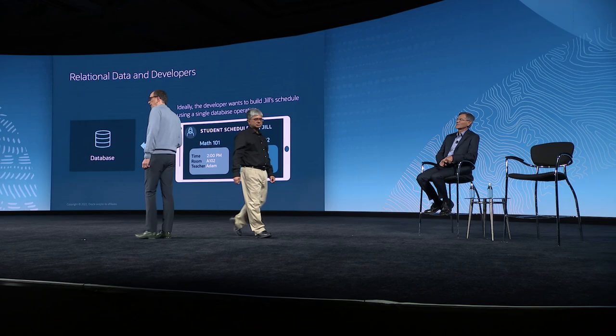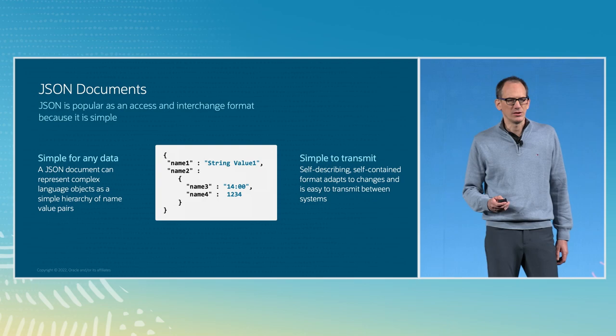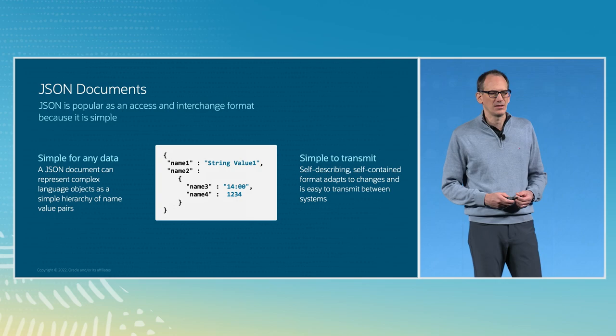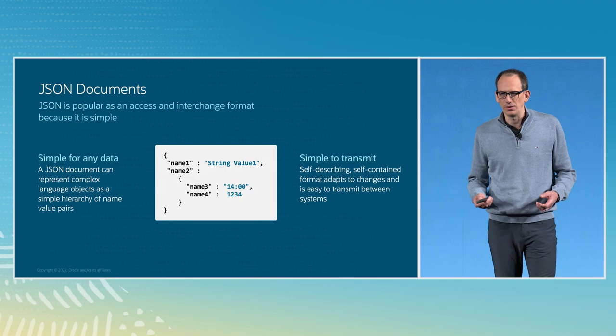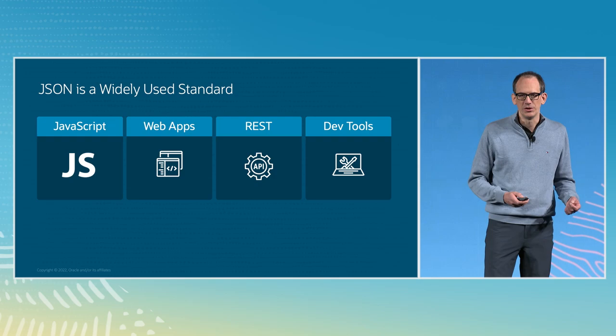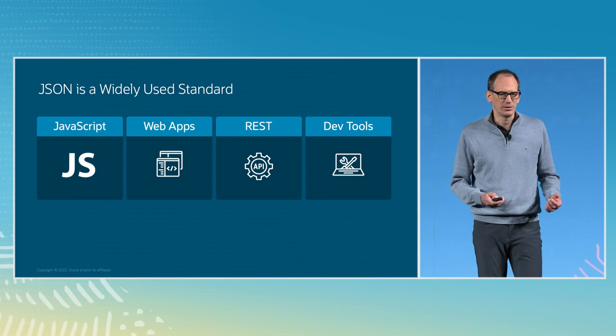What if we use JSON documents to build this application? This would really simplify database access. JSON is very popular as an access and interchange format because it is so simple. A JSON document can represent any object of your language — for example, the student schedule as a simple hierarchy of name-value pairs. JSON is self-describing and self-contained, making it ideal to transmit data, and it is also schema flexible. If your application changes, you can adapt your JSON to reflect these changes. Today JSON is already widely used in modern programming languages like JavaScript for mobile or web applications. A REST API typically responds with a JSON document, and development tools widely use JSON as well.